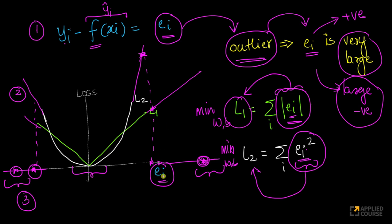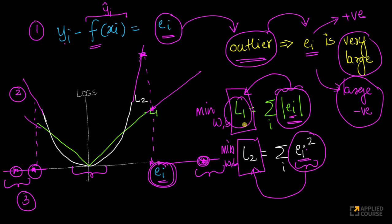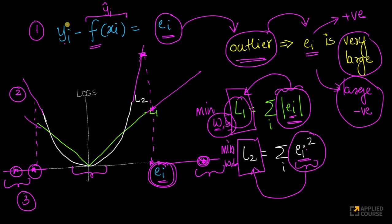So, the impact of outliers is significantly more if you are minimizing L2 loss than if you are minimizing L1 loss. L2 will be more impacted by your outliers than L1. Hence, it is preferable to use L1 loss rather than L2 loss when you want a better model. You don't want your outliers to impact your model's minimization process. This can be explained simply using geometry: connecting how outliers correspond to large eis and how L1 vs L2 grow differently.